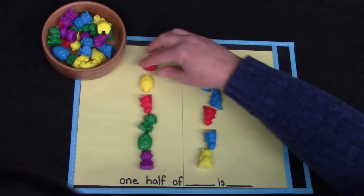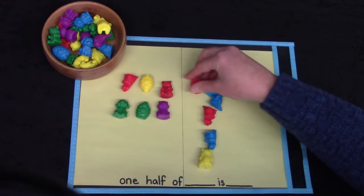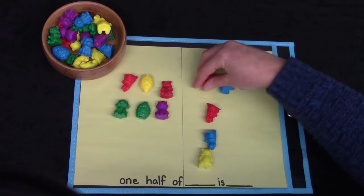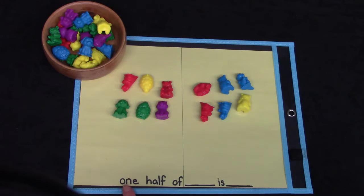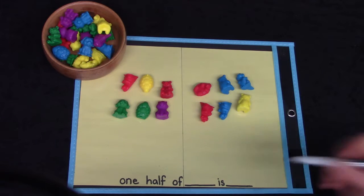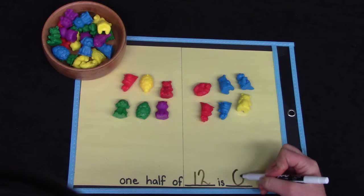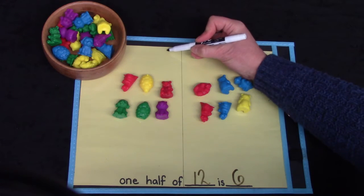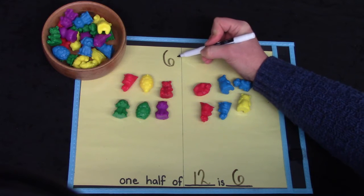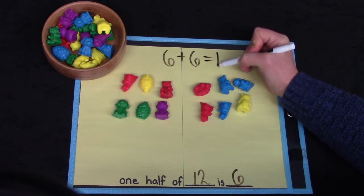On this side I have one, two, three, four, five, six. And on this side I have one, two, three, four, five, six. One half of 12 is six. Maybe you remember this math fact. Six plus six equals 12.